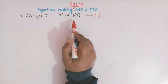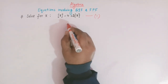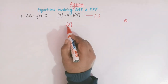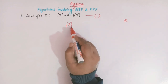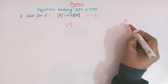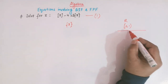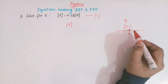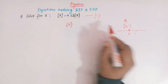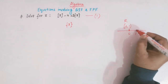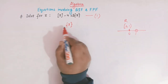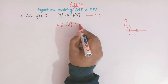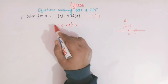We'll start from the fractional part function. We know that the domain of the fractional part function is the set of all real numbers, and the range of the fractional part function is the interval 0 to 1, where 0 is included but 1 is not. So we can write: the fractional part of x is greater than or equal to 0 but less than 1.